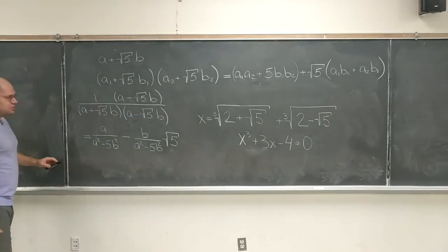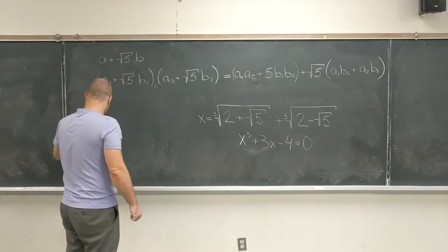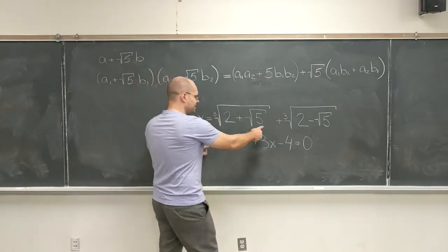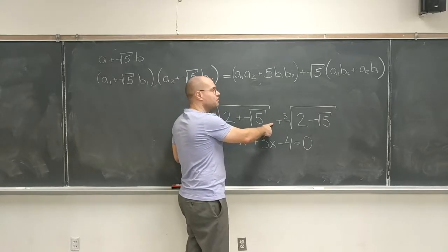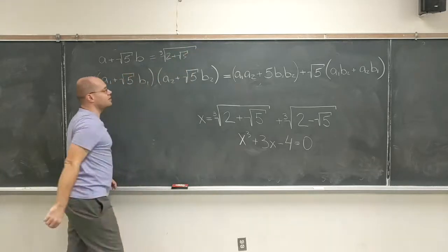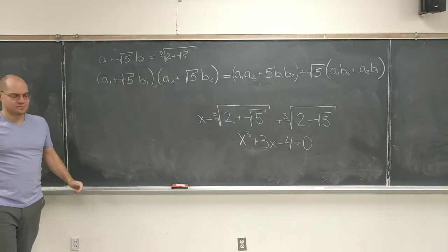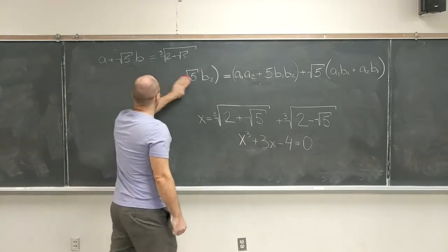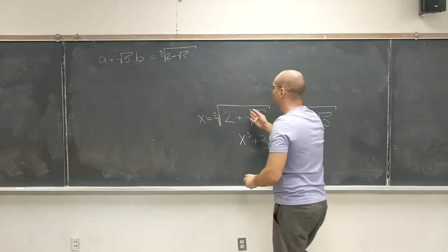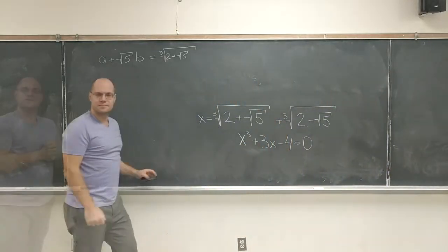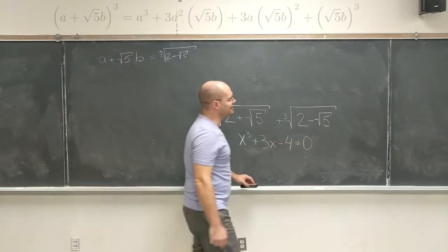So that's what must have occurred to Tartaglia. So he said, I'll bet you that this is also of the form a plus square root of 5b. And now it's just a matter of finding the right a and b. So let's see if it works. So how would you go about determining what the right a and b are to equal this quantity? Cube both sides. Sure. Let's cube both sides. Use the formula that I had here last time.